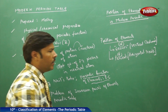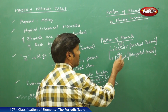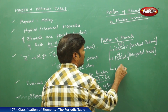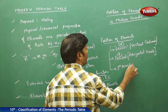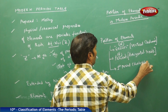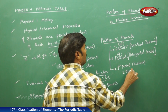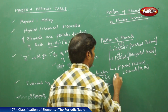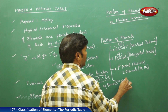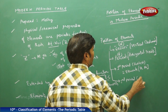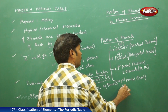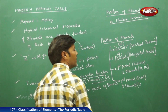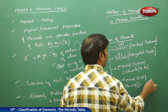If you take 7 periods: the first period is the shortest period and it contains only two elements, that is hydrogen and helium. The second period is short and it contains eight elements, starting with lithium and ending with neon.